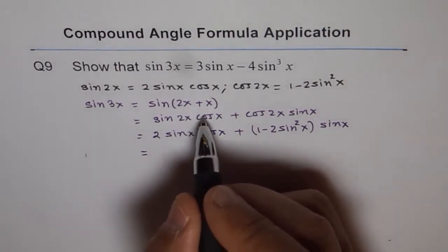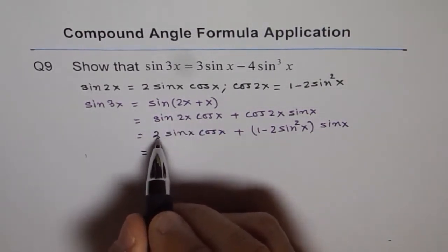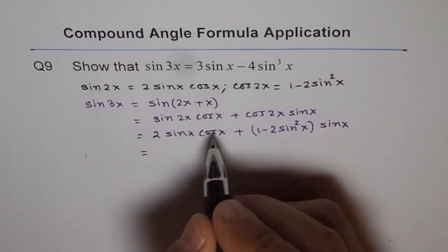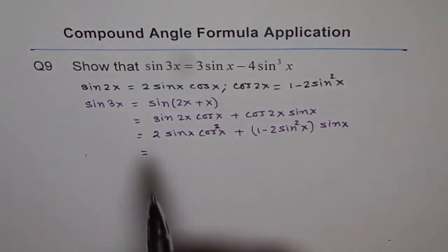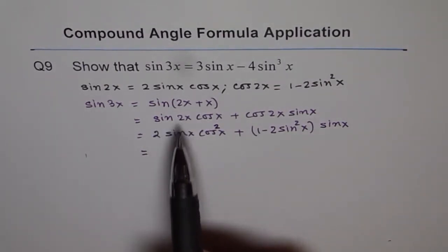Now, oh, I forgot to write cos x. Sine 2x is 2 sine x cos x times cos x. So let me write this. Times cos x, let me square it now. Okay, that's why. So it is like sine 2x.